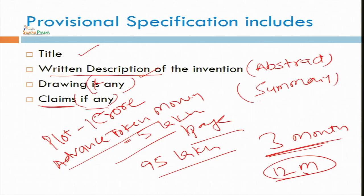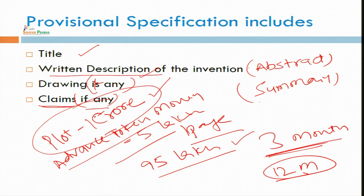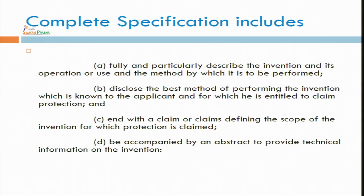You can mint the provisional specification as a token money — like 5 lakh rupees — and after 12 months, you have to give complete specification with all the complete details about your invention. The complete specification must describe the invention fully. It must include the operation, use, or method by which it has to perform.